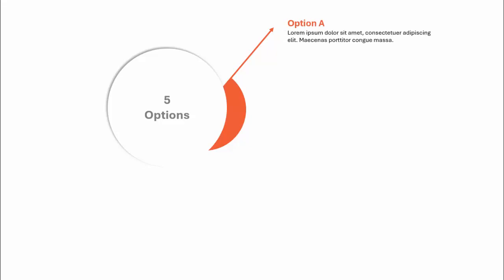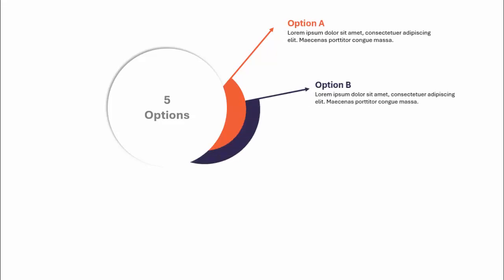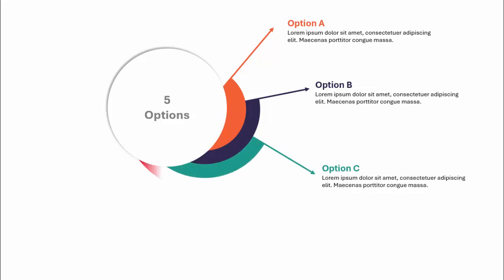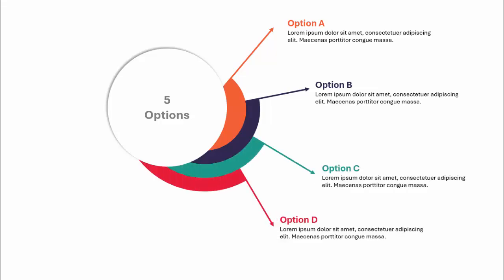In today's tutorial, I'm going to show you how to create a five-options infographic slide in PowerPoint. When I click, it will show option one, then with different color combinations comes option 2, option 3, option 4, and option 5.